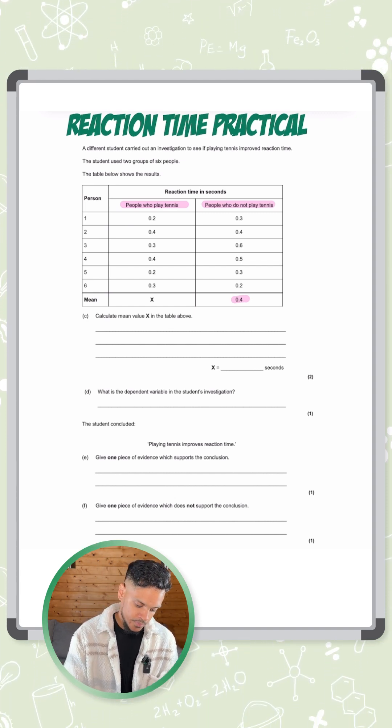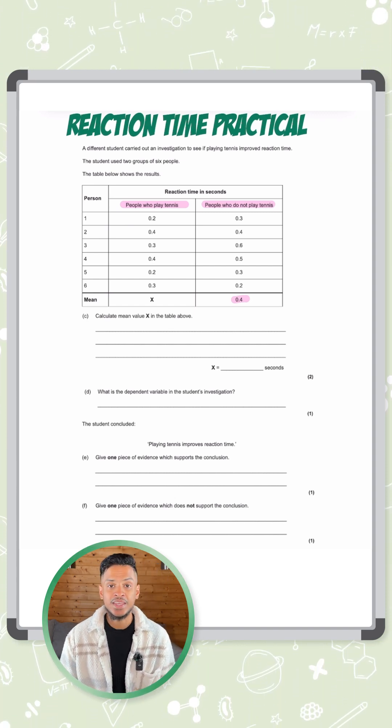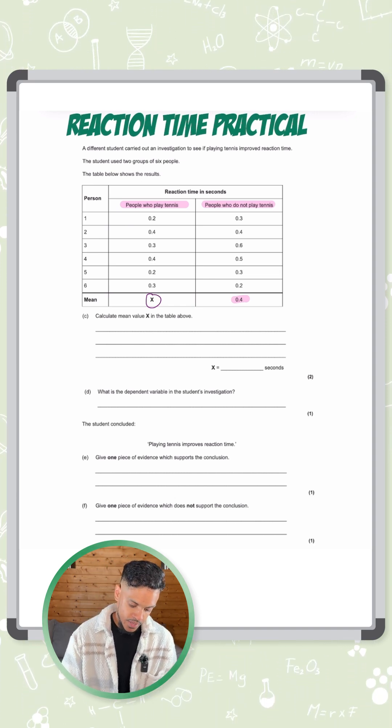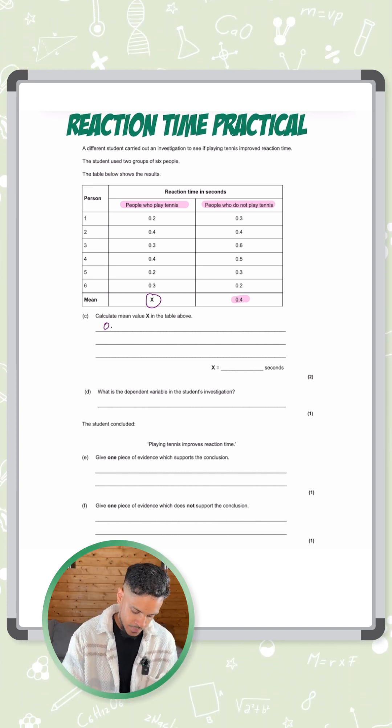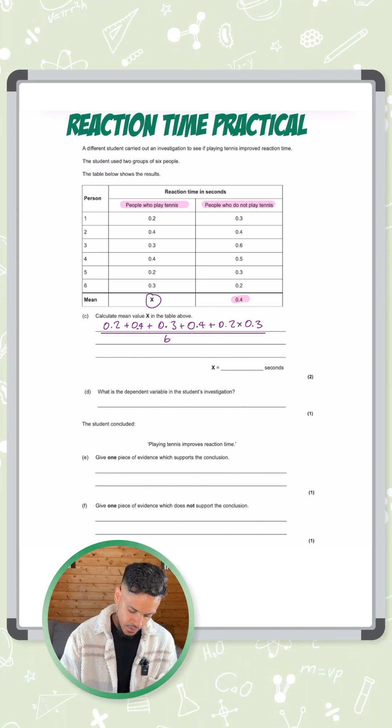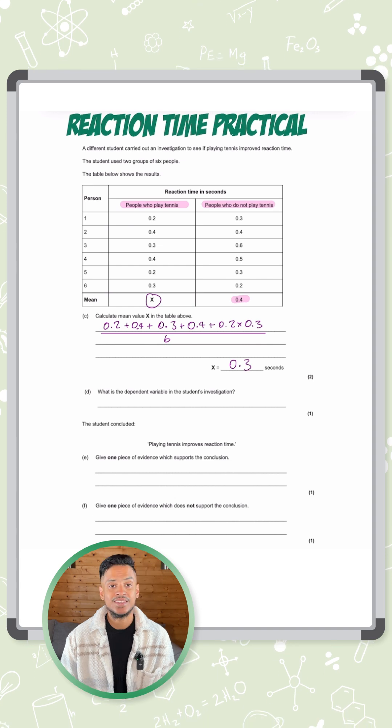The first part of the question is asking us to calculate the mean for people who do play tennis. So to find the mean, we want to add all of those numbers up and then divide it by the number which is six, and that gives you an answer of 0.3 seconds.